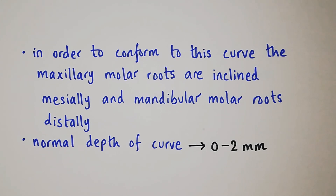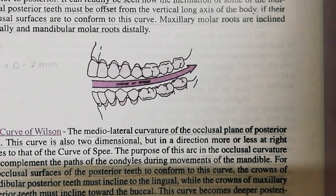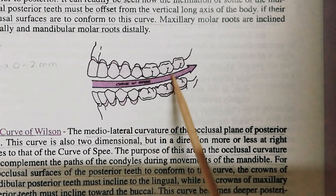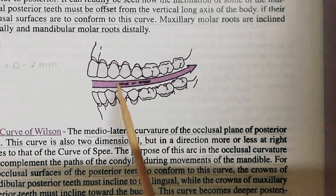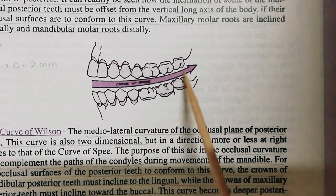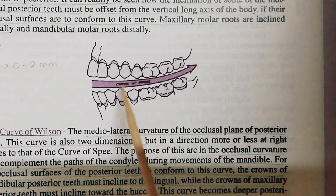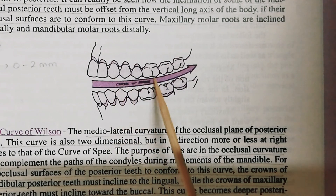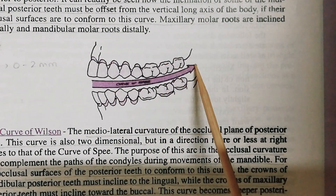The normal depth of this curvature is around 0–2 mm. In this diagram, this is the Curve of Spee. It starts from the canine tip and moves posteriorly, curving upward as it goes toward the posterior teeth.